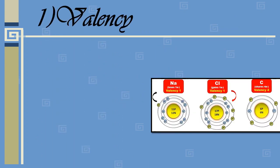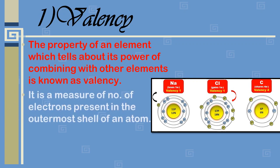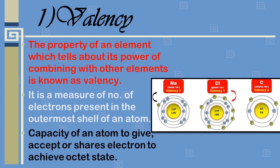First we will study valence. The property of an element which tells about its power of combining with other elements is known as valence. It is measured by the number of electrons present in the outermost shell of an atom — how many electrons are being lost, gained, or shared between two atoms to form new compounds or bonds, so as to achieve the octet state.